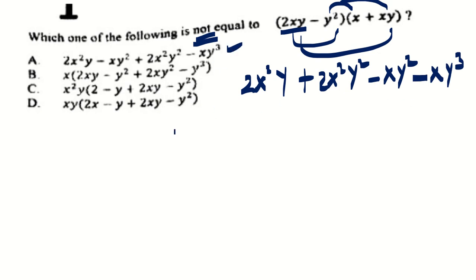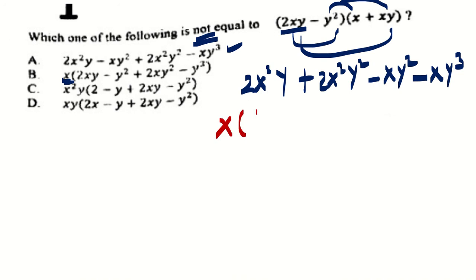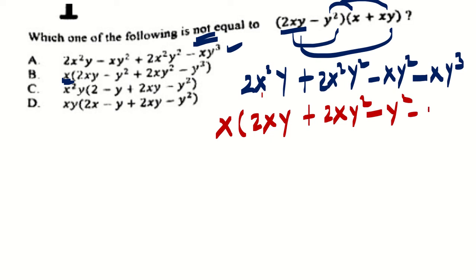Which choice contains that? The first one — correct. Again, can x be a common factor for each term? Yes, there is x in each, so take out x as the common. When you take out x, what's left? 2xy remains — it was x² so now just x. Plus, in the second term, 2xy² is left, with x taken out. Minus, what's left in the third? Just y² left. And at last, y³ is left. So this is found in B.